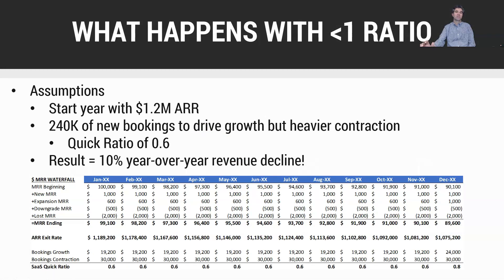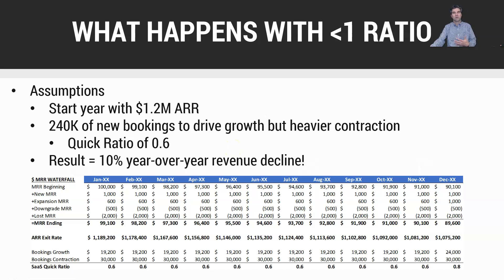What happens if we have a SaaS quick ratio of less than one? In this scenario, starting with 1.2 million of ARR, we're driving bookings growth of 240k but heavier contraction results in a quick ratio of 0.6. Starting the year at 100k of MRR, we experience a 10% revenue decline year over year — so by December, 12 months later, we have just under 90k of revenue on our books. Less than one will definitely impact your business and should raise red flags if you see consecutive weeks or months at that level.